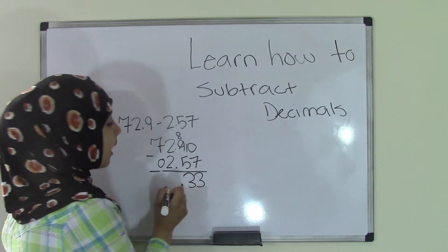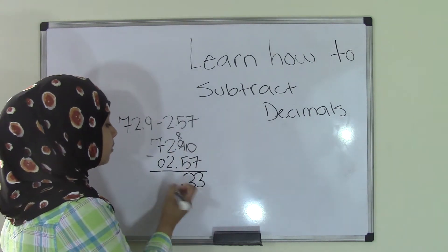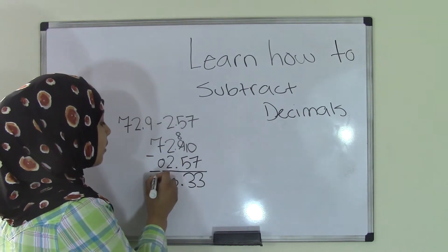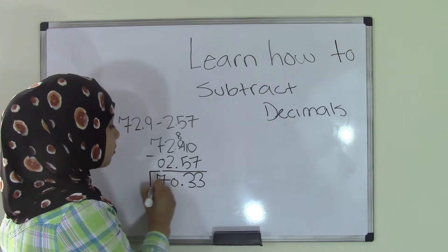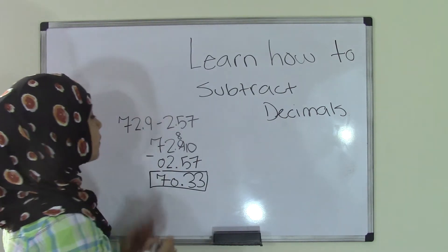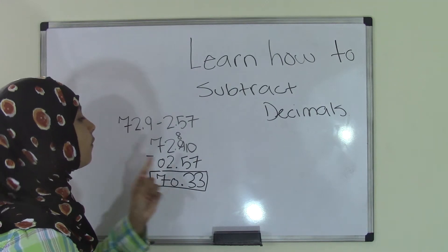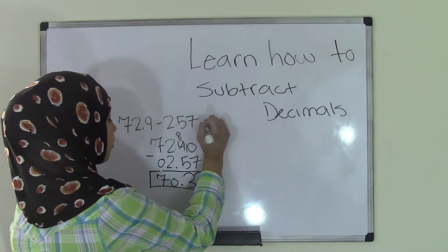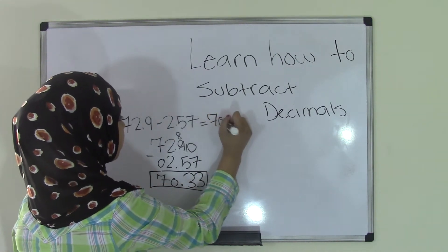So you'll just bring it down, and I'll continue subtracting. 2 minus 2 equals 0. 7 minus 0 equals 7. So that means the difference of 72.9 and 2.57 equals 70.33.